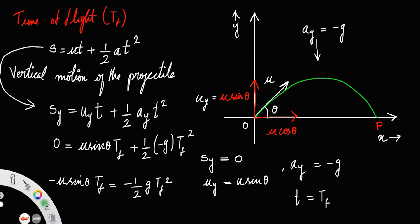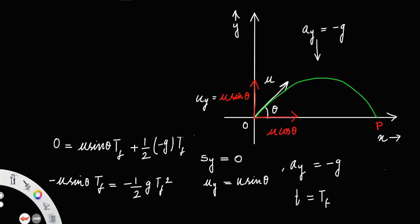You can cancel this minus and minus. So u sin theta times t_f equals half g times t_f squared. Since the time of flight cannot be 0 and always takes a positive value, you can cancel one t_f from each side.